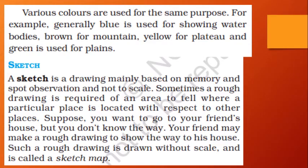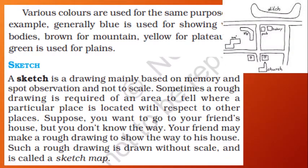Next is a sketch. A sketch is a drawing mainly based on memory and spot observation, and it is not drawn to a scale. Sometimes a rough diagram is needed to show where a particular place is in relation to other places. For example, if you are going to a friend's home, your friend might draw a rough map locating some landmarks or shops. This type of rough, unscaled map is called a sketch map.